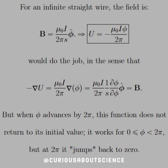Therefore, U of B cannot equal U of A. For an infinite straight wire, the field we know is μI over 2π s in the φ-hat direction. So we can formulate this to lead to a potential of negative μI φ over 2π. That would do the job in the sense that the negative gradient of this would lead to B.